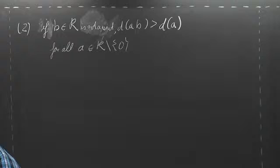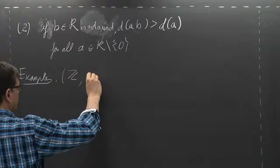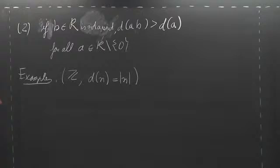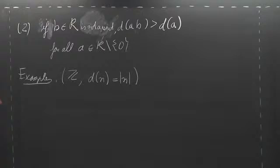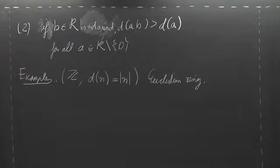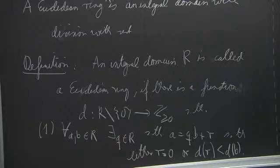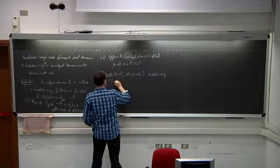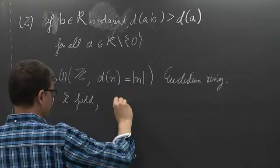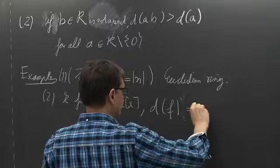Easy examples: if we take Z and set d(n) equal to the absolute value of n, this is a Euclidean ring, giving the usual division with remainder. Also, if k is a field, then k[x] with d(f) equal to the degree of f is a Euclidean ring.